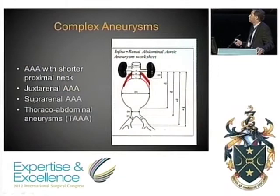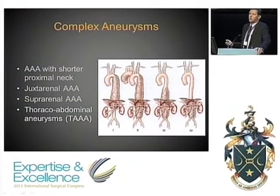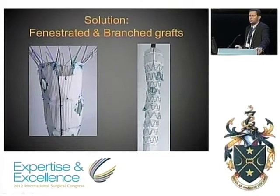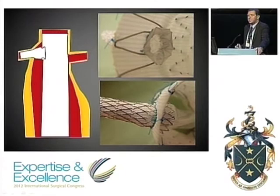Complex aneurysms are those almost or completely involving the visceral arteries — short proximal necks, juxtarenal aneurysms, suprarenal aneurysms involving the renal arteries and superior mesenteric artery, and of course the very complex thoracoabdominal aneurysms. The solution came with fenestrated and branch grafts: by inserting covered stents inside the fenestrations and later inside the branches, we created a seal and an exclusion of the aneurysm.